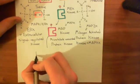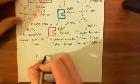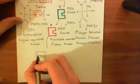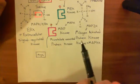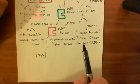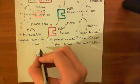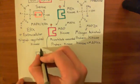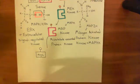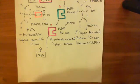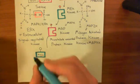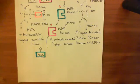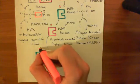Basically, MAP kinase is going to add phosphate groups onto two transcription factors. The transcription factors of the family MYC — and just like there are many RAS and RAF proteins, there are many MYC transcription factors. So MAP kinase adds a phosphate group onto MYC transcription factors, and when it has that phosphate group added, it becomes active.